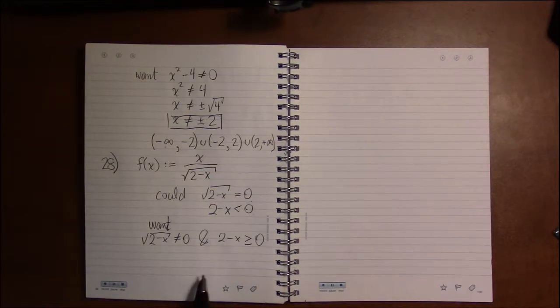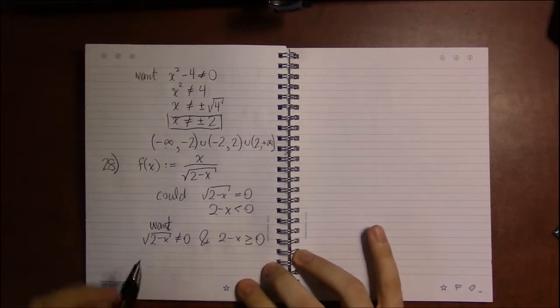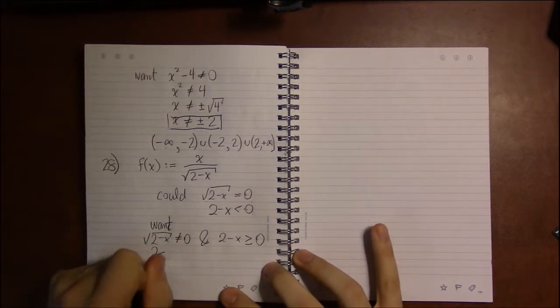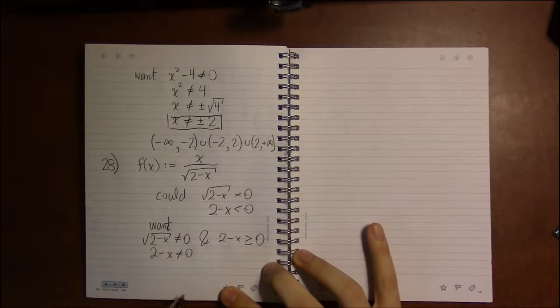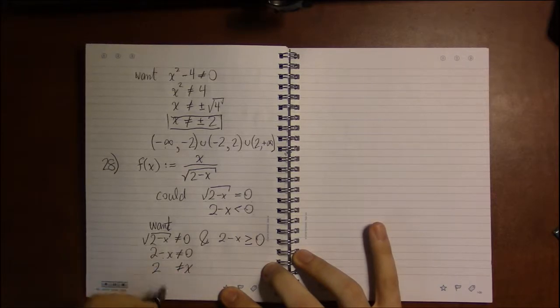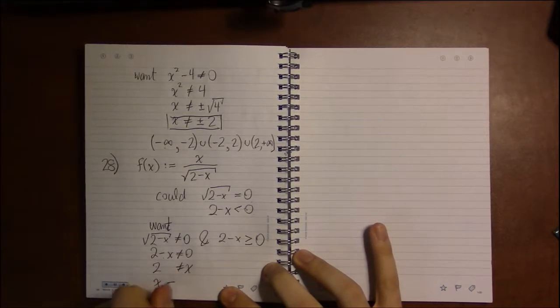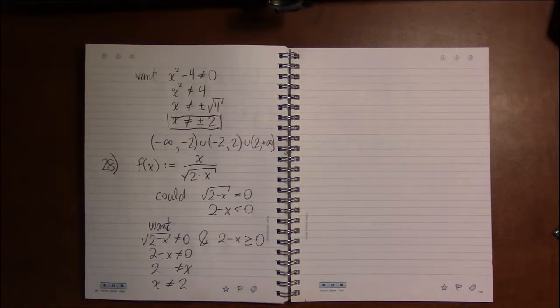That'll be important a little bit later on. Here if I solve this, I could square both sides, and squaring zero is just zero. I could add x to both sides, and then writing it in a more familiar way, I have that x can't be 2. Okay, got it.